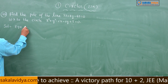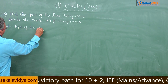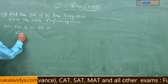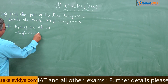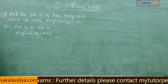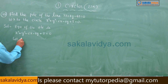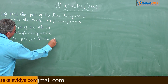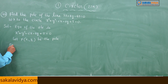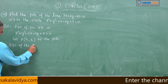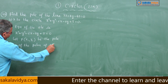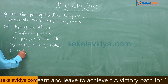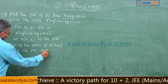Equation of the circle is x² + y² - 6x - 8y + 5 = 0. Let P be the pole. The equation of the polar of P with respect to the circle is S1 = 0.